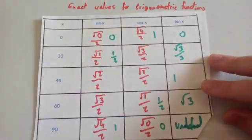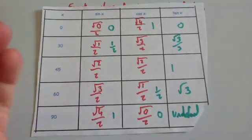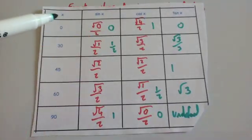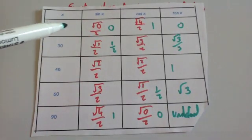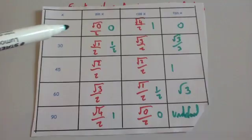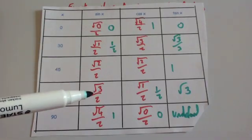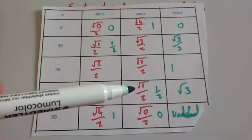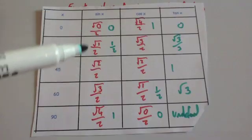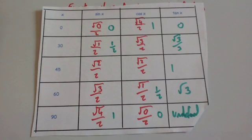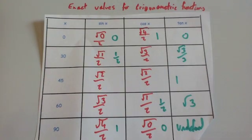So this is just a quick way to get them all. Start with sine of 0 is 0, then write 1, 2, 3, 4 and 4, 3, 2, 1, 0, square root them and divide by 2. This method was given to me by my colleague Vicky — I can't take credit for it, but I think it's fantastic.